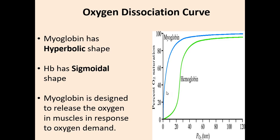Myoglobin has a higher oxygen affinity than hemoglobin, but myoglobin is not suited for oxygen transportation in the body. When myoglobin binds efficiently with oxygen in the lungs where partial pressure of oxygen is high, it would not release much oxygen in the tissues where partial pressure is low. Hemoglobin solves this problem by undergoing a transition from a low-affinity state (T state) to a high-affinity state (R state).